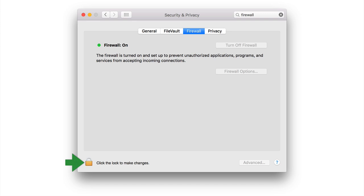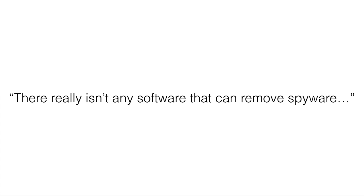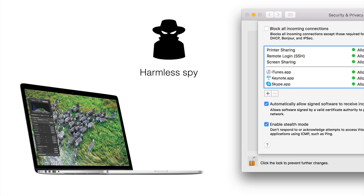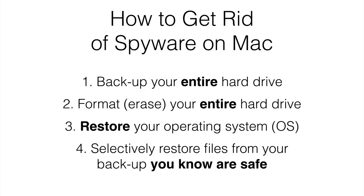It's really brilliant — I love it. Remember, there isn't really any software that can remove spyware, so if you do have it, or think you might, these are the steps to get rid of it. First, get your computer set up with those two checkboxes so you don't get any future spyware. Then get rid of existing spyware by backing up your entire hard drive, formatting and erasing everything, restoring your operating system, and selectively restoring files from your backup that you know are safe. That's the process. I hope you enjoy this video and hope you don't have any spyware ever again. This is Chase Swift — have a great day, I'll see you in the next video.